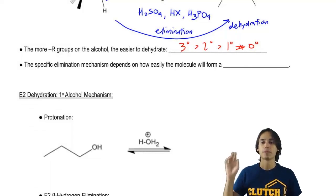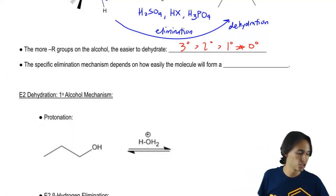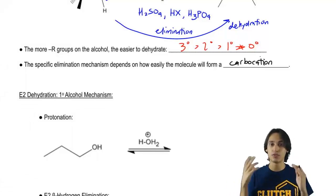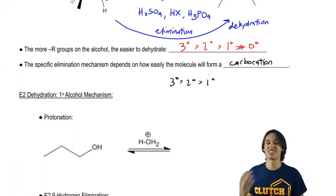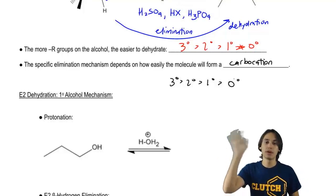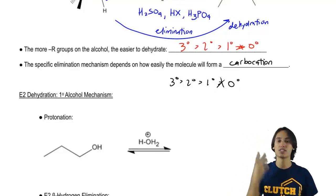The second thing is that the specific elimination mechanism that we use is going to depend on how easily the molecule is going to form a carbocation. And the understanding of carbocations is kind of essential to these two mechanisms. All that means is that if you guys remember back to the trend of carbocation stability, that tertiary carbocations are the most stable and primary carbocations are the worst. And then obviously methyl is even worse than that, but like I said, methyl doesn't even get counted because we can't use it.